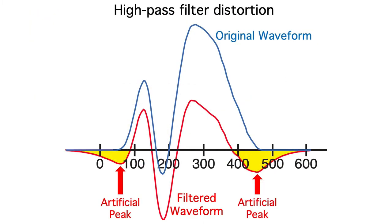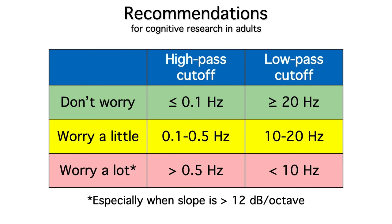Now you're probably feeling a little nervous about filters, but they're actually essential — you just need to make sure the data aren't over-filtered. How do you know if the filtering is too extreme? You can use this handy-dandy little table. It tells you what values are okay, what values are potentially problematic, and what values might really distort the data. Keep in mind that these values are for cognitive and affective research with adults; different filter settings may be needed for early sensory responses or recordings of infants and young children.